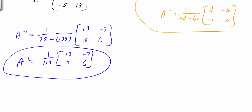You could leave the scalar as 1 over 113 out front, or you could multiply it through to get 13 over 113, negative 7 over 113, 5 over 113, and 6 over 113. Either way is correct — it probably looks a little nicer leaving it on the outside.